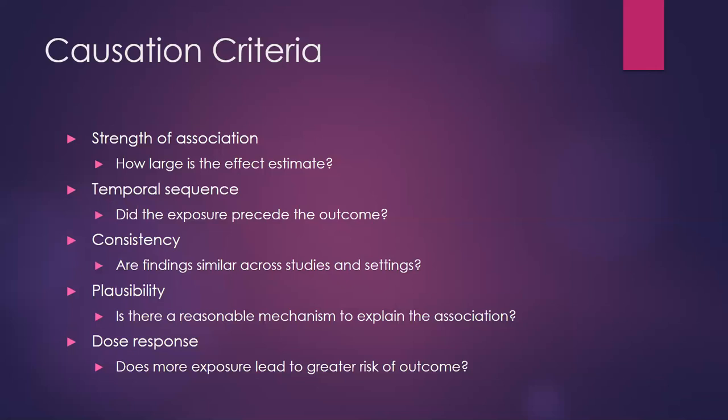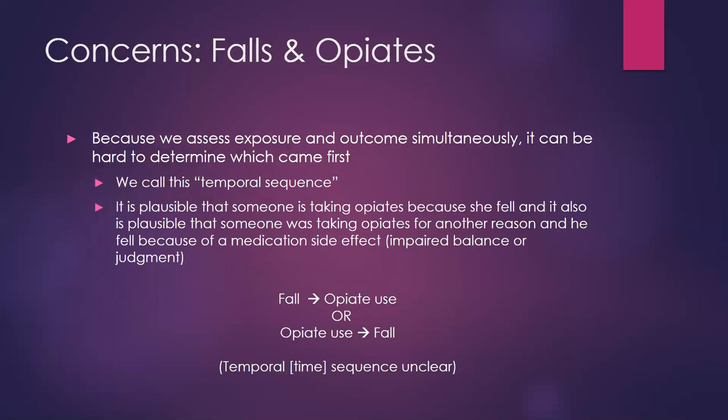For example, adverse childhood experiences and the risk of adult depression: if you go from zero to one to two to three to four adverse experiences, do people with four have a greater risk of depression than those with three, two, or one? You can structure data collection to look at different doses — not just a dichotomous yes/no exposed/not-exposed, but finer grades of exposure. That can strengthen the argument that the exposure causes the outcome. There may be threshold effects where dose-response doesn't apply, but when relevant it's something to look for.